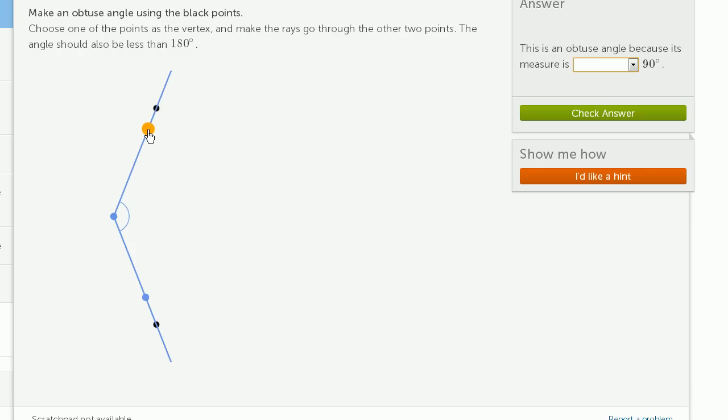We have to be very careful that we go right through those points. Because otherwise, it might mark us wrong. So that looks pretty good. That's an obtuse angle because its measure is greater than 90 degrees. Let's do one more of these.